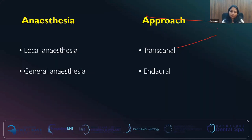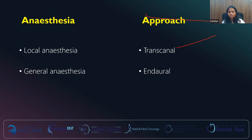Surgery can be done under both local anesthesia and general anesthesia. We use transcanal and endaural approaches. Advantages of local anesthesia include assessing vestibular symptoms during surgery, and the position of the prosthesis can be assessed and readjusted with the patient's feedback. General anesthesia is more comfortable for patients with less anxiety, and not all patients can tolerate local anesthesia. The endaural approach is generally not required unless there are certain anatomical conditions — most of the time, the transcanal approach will suffice.